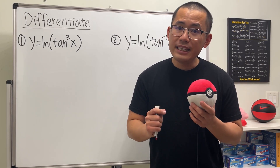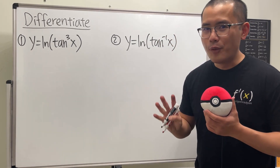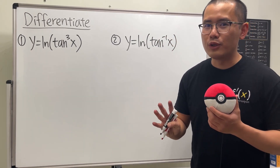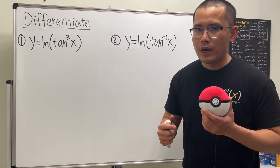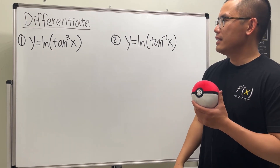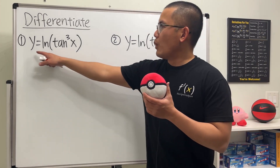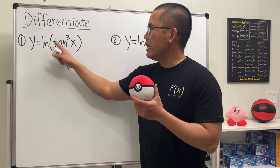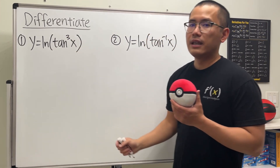Dear calculus students, pay attention to these four derivative questions. They all involve ln and tangent. Let's take a look at these two first: y equals ln of tangent to the third power x, and the second one is y equals ln of tangent with a negative one and an x.